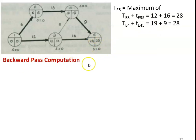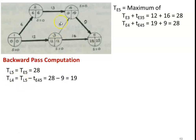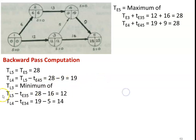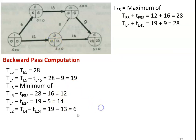Now we use the backward pass computation to calculate the latest allowable time. TL5 is fixed equal to TE5 = 28. TL4: there is only one outgoing arrow, TL4 = TL5 - t(4,5) = 28 - 9 = 19. TL3: with two outgoing arrows, TL3 = minimum of (TL5 - t(3,5)) = 28 - 16 = 12, and (TL4 - t(3,4)) = 19 - 5 = 14. The minimum is 12. TL2 = TL4 - t(2,4) = 19 - 13 = 6.